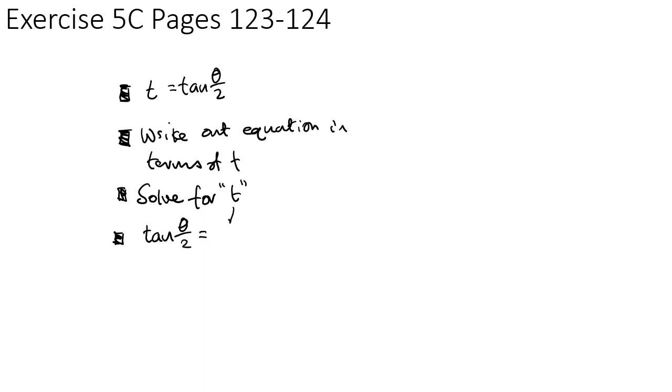So the way that we're going to solve these equations is we set t equal to tan theta over 2. Then the next step after that is to write our equation in terms of t. Then once we've written it in terms of t we solve for t. And then once we've solved for t we can then say tan theta over 2 equals whatever that number is, and then we can find the solutions. When we find those solutions we're going to be using cast diagram to help us make sure we get all the solutions.